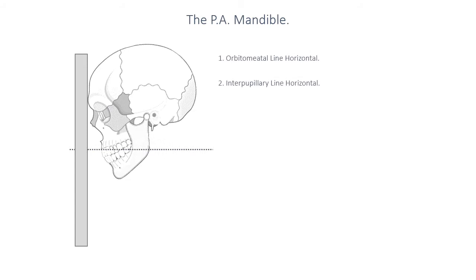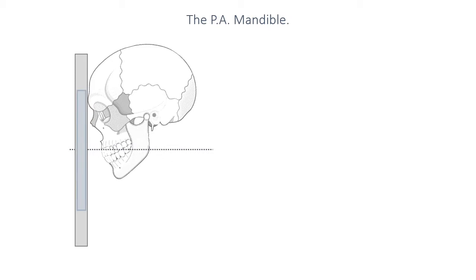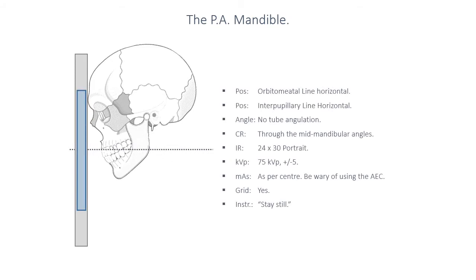For the PA mandible projection, the orbitomeatal line should be horizontal — that is, the forehead is tucked in so the patient's nose and forehead is against the image receptor, and the interpupillary line should be horizontal. When we undertake those two things, the primary beam should be able to elongate that mandibular structure. I do not advocate a tube angulation for mandibular projections. There should be no tube angulation, and the centering point should be in the mid-sagittal plane at the level of the mid-mandibular angles.